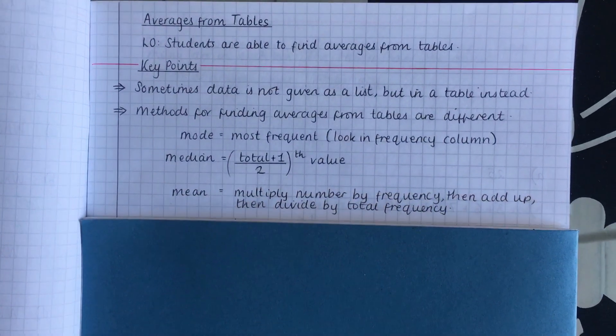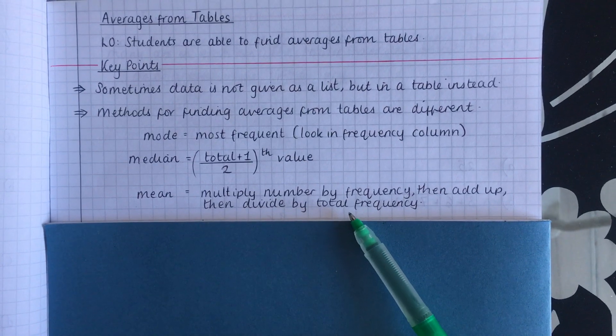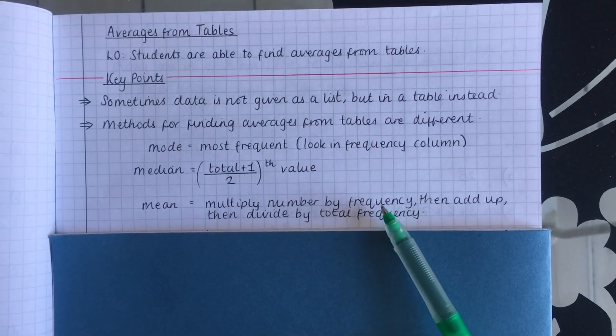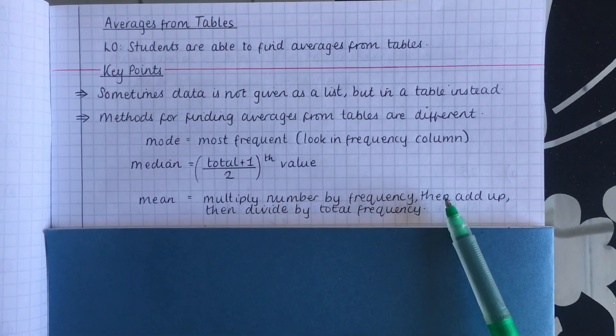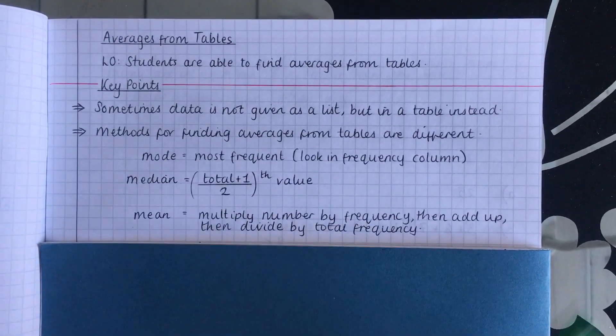For the mean, you need to multiply the number by the frequency, then add those up, then divide by the total frequency. So an added step here where we have to multiply first, then we add up, then we divide by how many there are. Again, this will become clearer once we do an example.